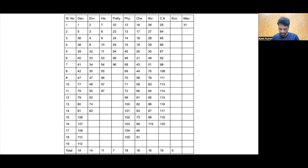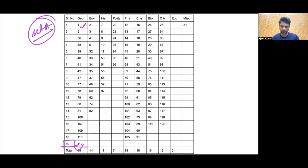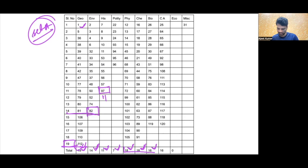The most questions are from Geography — 19 questions. Environment se 14 questions poochhe gaye hain. History se 11 questions poochhe gaye hain. Then Polity se 7 hai, kaafi kam hai. Physics se 18 aur Chemistry se bhi 18 hai. Biology se 16 hai. Toh ab samajh sakte hain ki 52 questions sirf Science section se poochhe gaye hain — Physics, Chemistry, Biology.